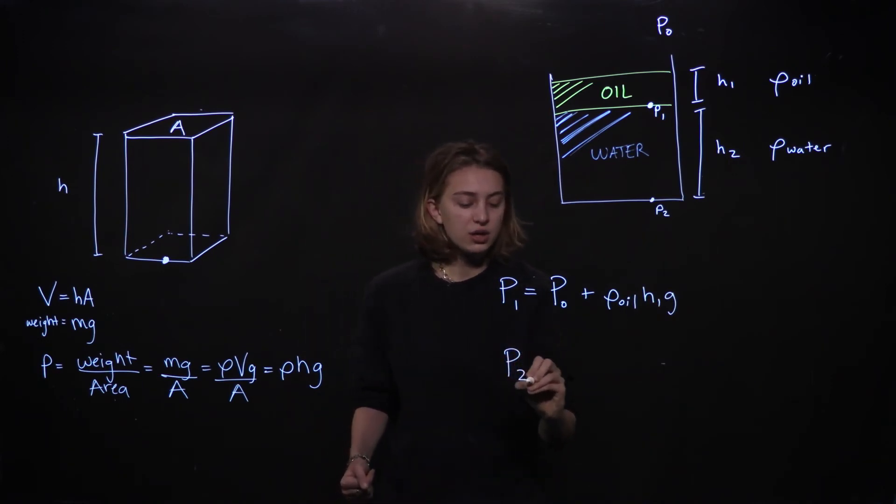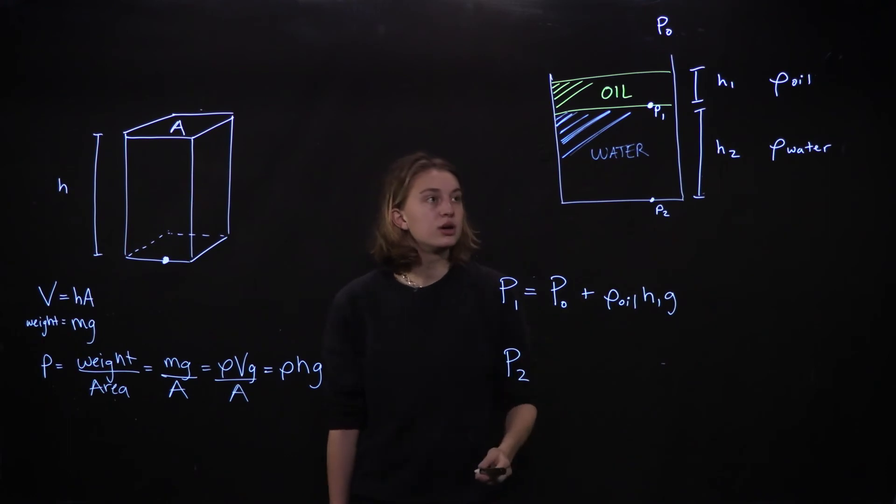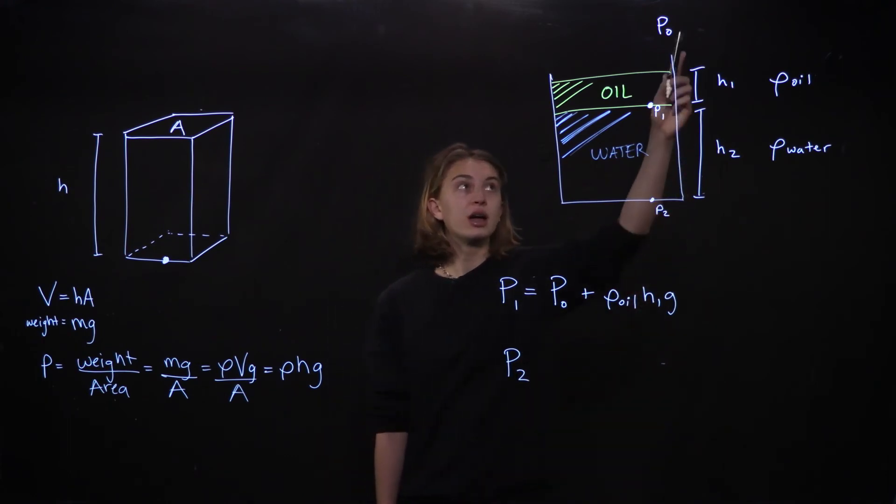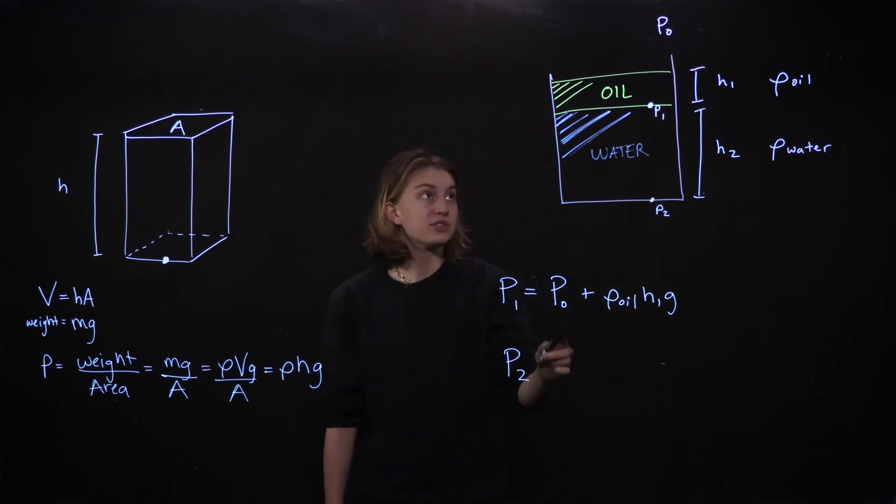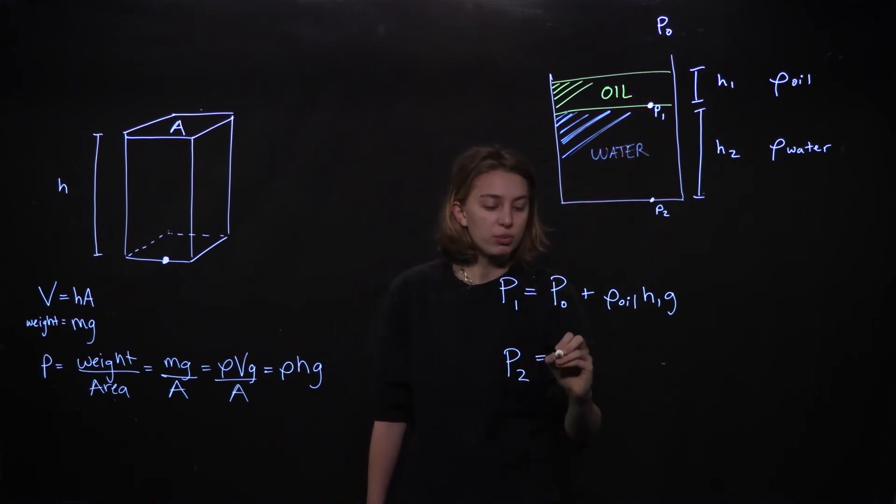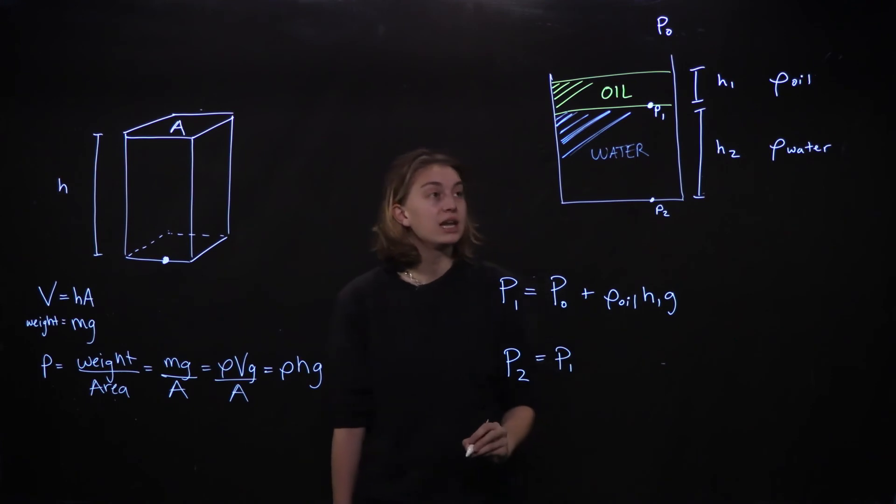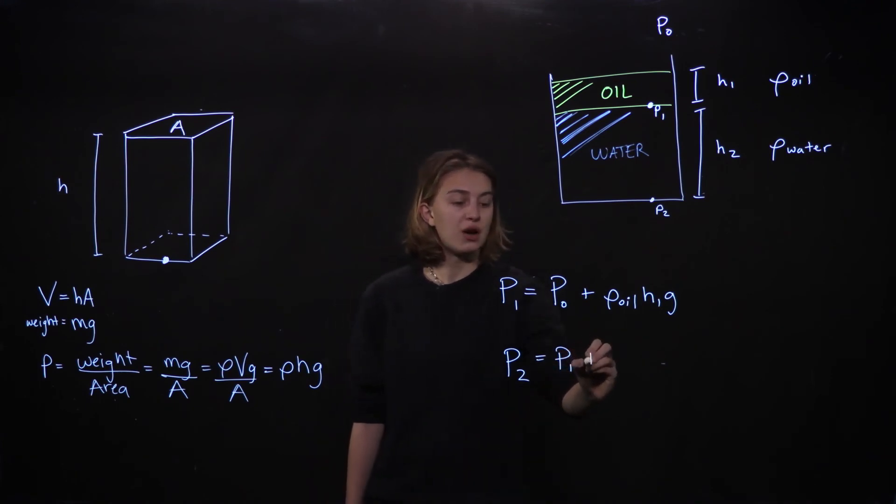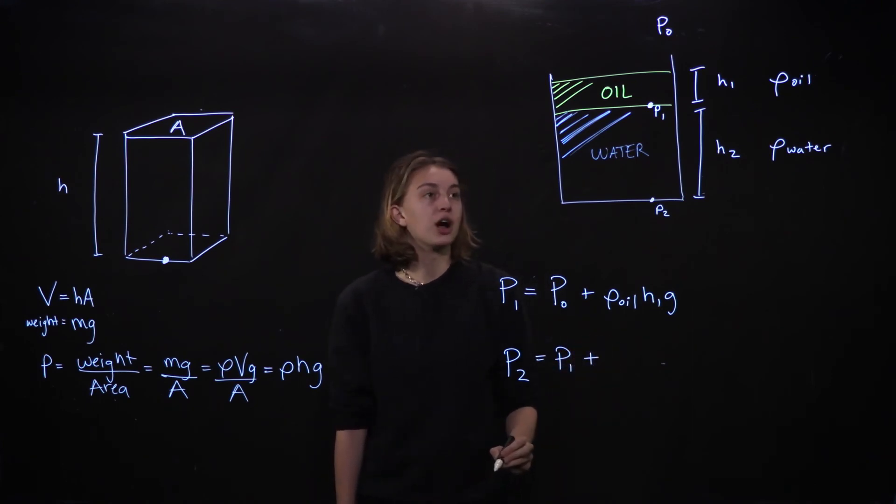When we think about P2, the starting pressure is no longer atmospheric. It has a component of atmosphere in it, but it is P1 rather than atmosphere. So we will add P1 at the beginning here. And then we also need to account for the pressure of the column of water itself.